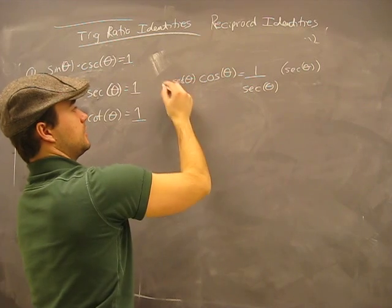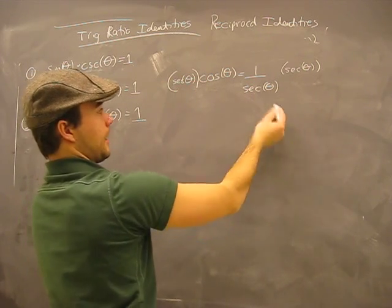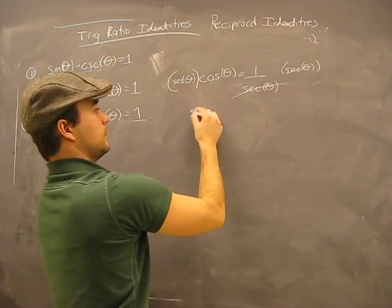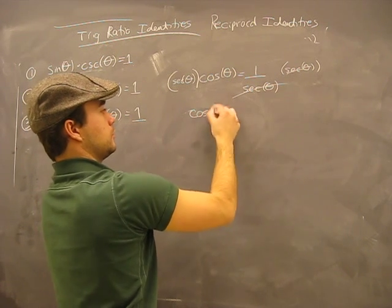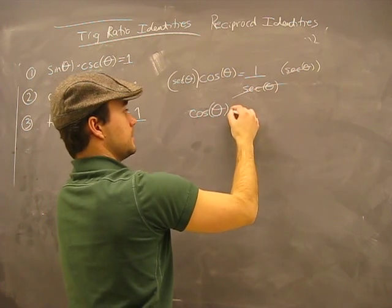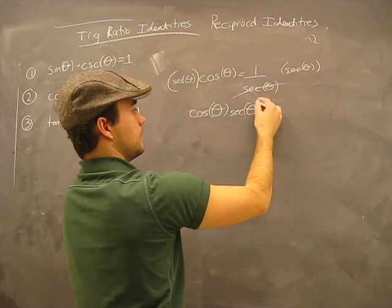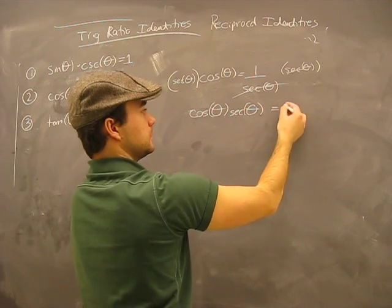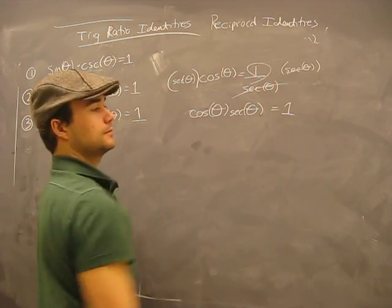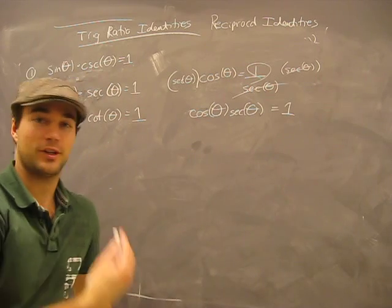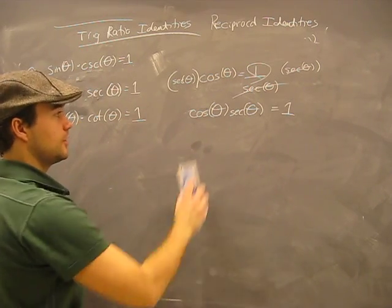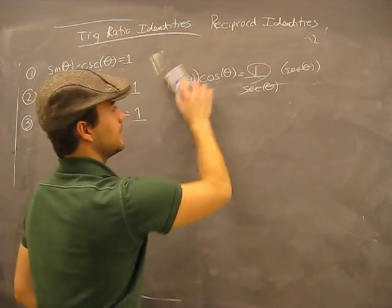Multiply secant theta on both sides — canceling — cosine theta times secant theta equals 1. That's all that's left. Trig identity number 2 proved. Just that easy.